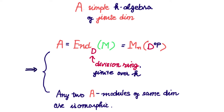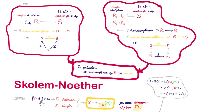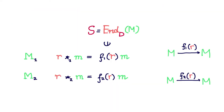Let us see how both of these come into play in Skolem-Noether. As we said, S is finite dimensional over k and simple, so S can be realized as the endomorphism ring of some module M over some division algebra D. Why is this useful? Well, if we view S as the endomorphism ring of M over D, then we can view each fi as giving M an R-module structure. This is because each fi associates to every element in R some endomorphism of M, so we can use it to define an R-module structure on M.